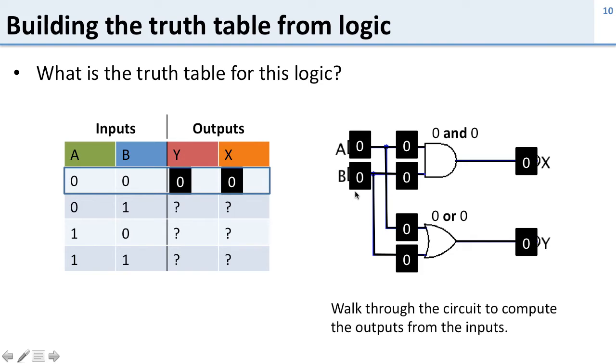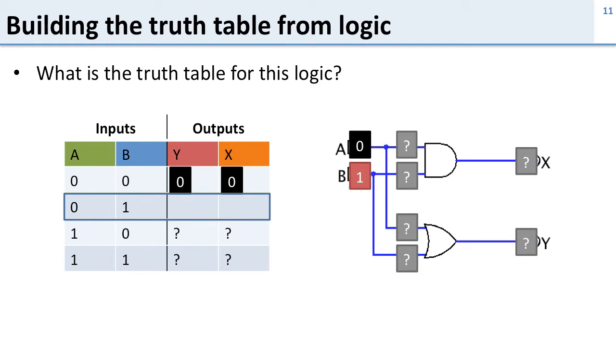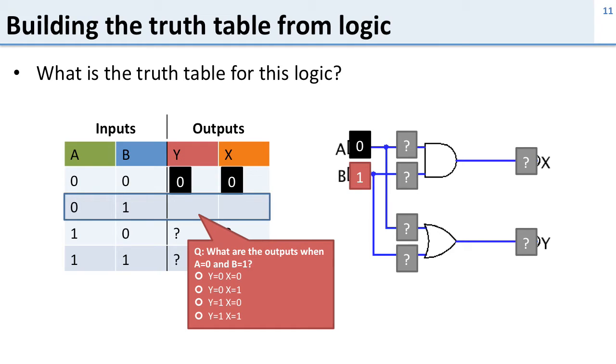What we did is we walked through the circuit. We started at the inputs and traced the values through to compute the outputs. Let's take a look at the next row. What happens when the inputs are A zero and B one? Go ahead and follow this through and figure out what the answer is going to be.